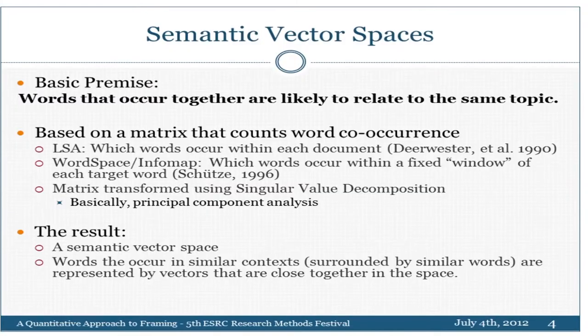What we're going to do is use semantic vector spaces — basically multi-dimensional spaces built on the idea that words that occur together relate to the same topic. This is very much like what previous talks were about. You start with a pattern of word co-occurrence, look at which words occur with which words, then apply statistical mechanisms, and you end up with a vector space in which every word is described by a vector — a place in that space.